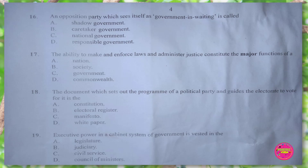Question 17. The ability to make and enforce laws and administer justice constitutes a major function of: A. a nation, B. society, C. government. The correct answer is C. government.